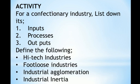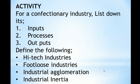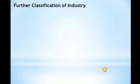Another activity asks you to list the inputs, processes, and outputs for a confectionery industry. Confectionery industries produce products such as bread and biscuits. There's also a question asking you to define the following terms: high-tech industries, footloose industries, industrial agglomeration, and industrial inertia. Research these and post your answers. Now, let's look at further classification of industries, starting with large scale industries.